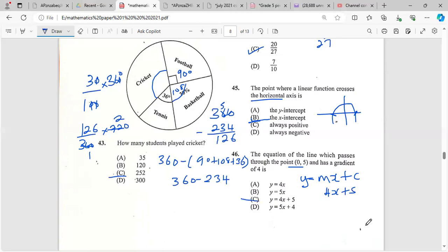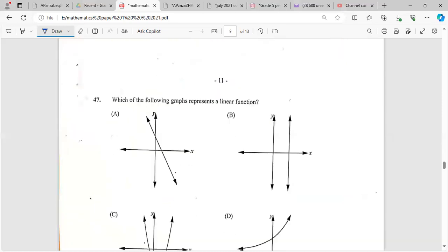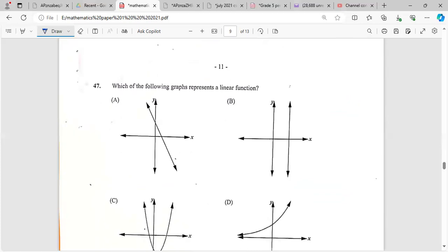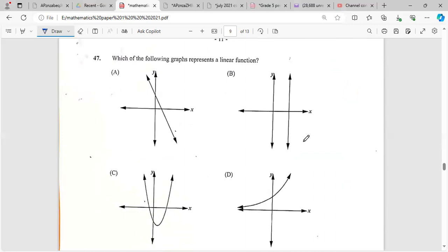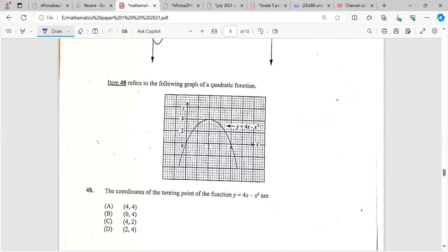Which of the following graphs represents a linear function? Let's look at all of them. That would be A. Item 48 refers to the following graph of a quadratic function. The coordinates of the turning point of the function y equals 4x minus x squared - the turning point is the highest point on the graph. Remember we read x first before y. So x is 2, y is 4. That's (2, 4).